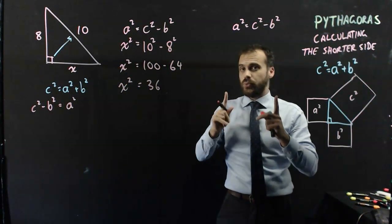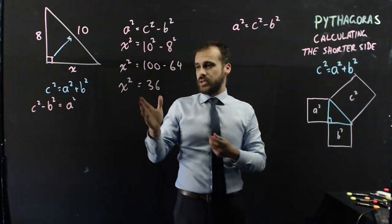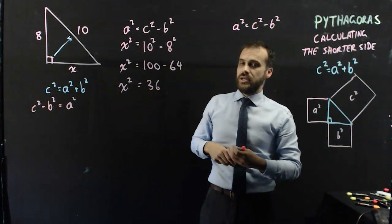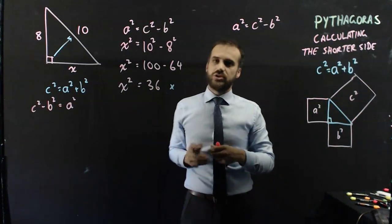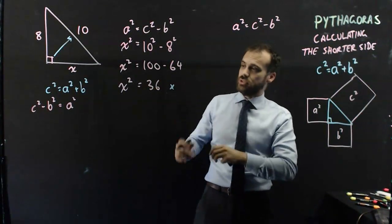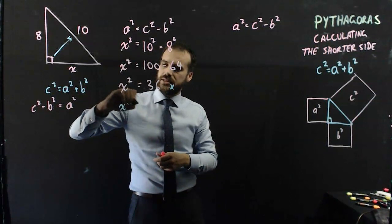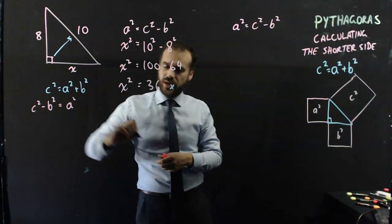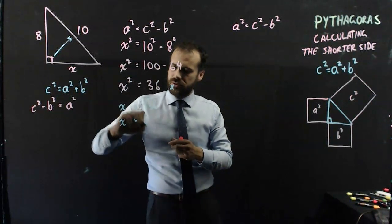And we're finished. We're not finished. x squared is not what we're trying to find. We're trying to find x. So, this is often the bit where students stop, don't stop, still more work to do. x is equal to the square root of 36. So, x is equal to 6.